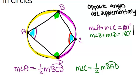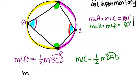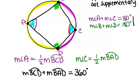Okay, now what do we know about those two big arcs, arc BAD and arc BCD? Well, all together they form the whole circle. So that means that the measure of arc BCD plus the measure of arc BAD equals 360 degrees because it's the whole circle.